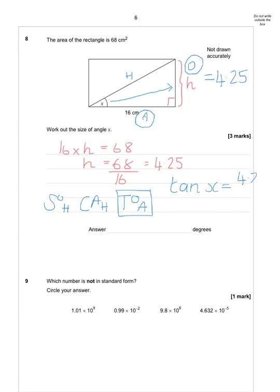So tan X equals the opposite, which is 4.25, divided by the adjacent. The reason I write my SOHCAHTOA like this is to remind my students that it's the middle letter divided by the last letter. So cos is adjacent over hypotenuse, sine is opposite over hypotenuse.